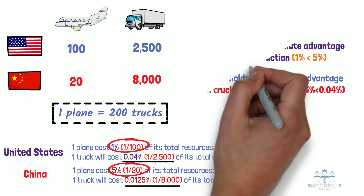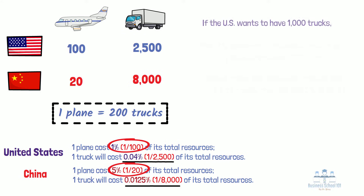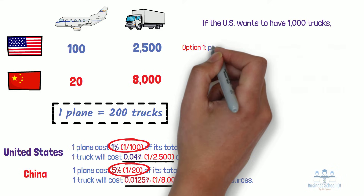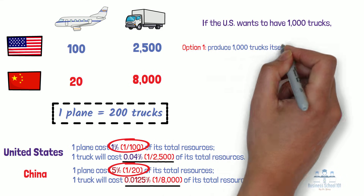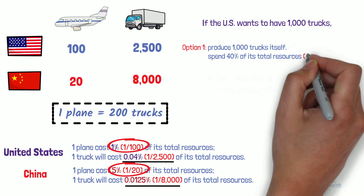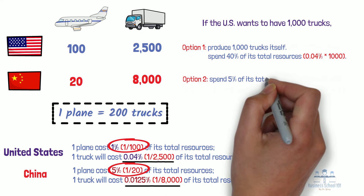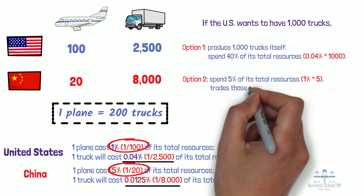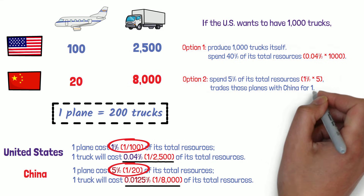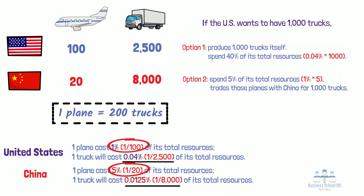Therefore, if the U.S. wants to have 1,000 trucks, it has two options. Option 1: the U.S. chooses to produce trucks itself, and this way the U.S. would need to spend 40% of its total resources. Option 2: the U.S. chooses to spend 5% of its total resources to produce 5 planes, and then trades those planes with China for 1,000 trucks. When we compare these two options, it is not difficult to conclude that Option 2 is better for the U.S., because it can save a lot of the country's resources while still obtaining the same number of trucks. Therefore, the U.S. benefits from trading with China.